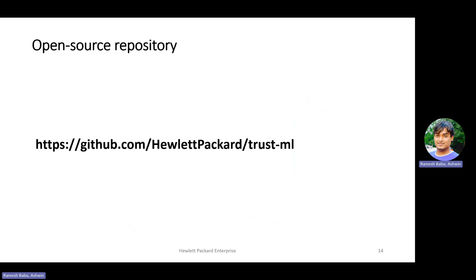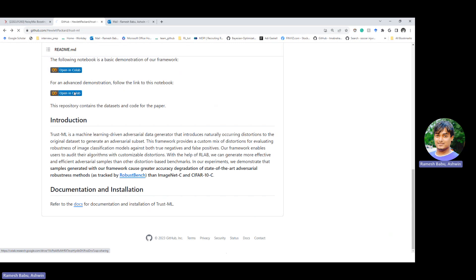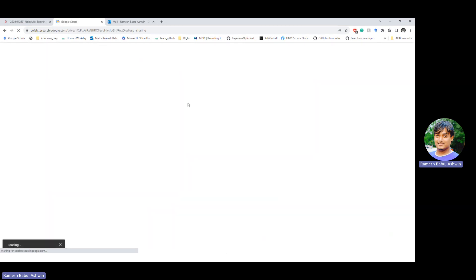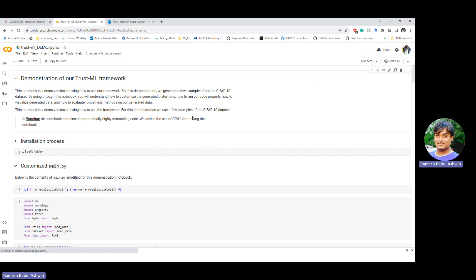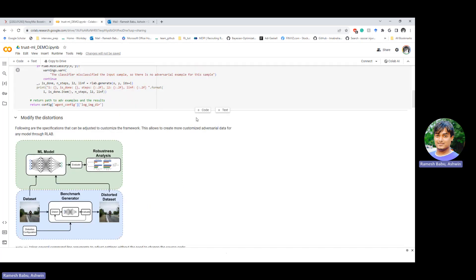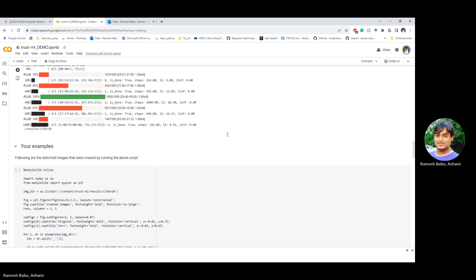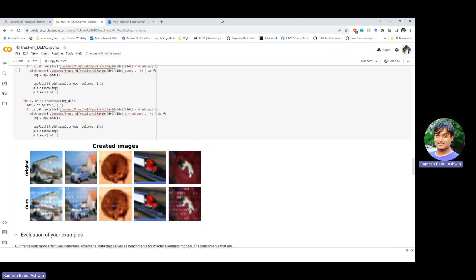So our work has been open sourced and it can be found at this repository. I can open one of our repositories and quickly show our demo. Here we have the demonstration of our trust ML framework. Here we have all the codes integrated to generate adversarial samples. And you will be able to see some of the sample output here as well.